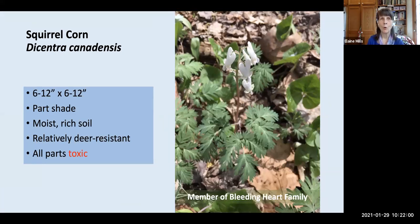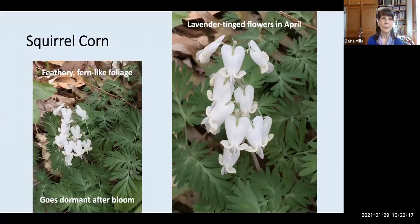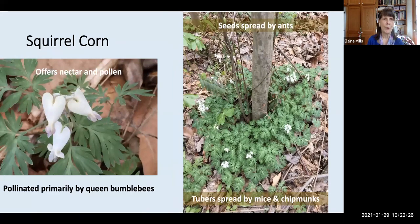A related plant is squirrel corn, Dicentra canadensis — the same height, 6 to 12 inches, and again the parts of this plant are toxic. You can see why it's a member of the bleeding heart family — the flowers look rather heart-shaped. It has that beautiful feathery, fern-like foliage and lavender-tinged flowers. This plant offers both nectar and pollen, and is pollinated primarily by queen bumblebees. The seeds of this plant are spread by ants, and the tubers underground are sometimes taken up and spread by mice and chipmunks.